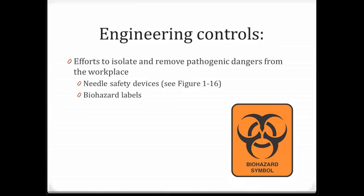There are also engineering controls — efforts to isolate or remove pathogenic dangers from the workplace. We often have needle safety devices and biohazard labels on potentially infectious materials, and this is an example of a biohazard label.